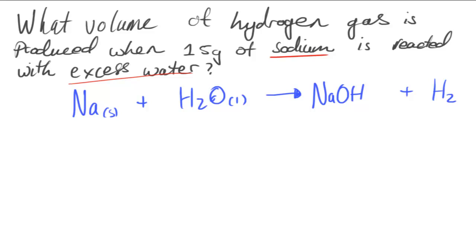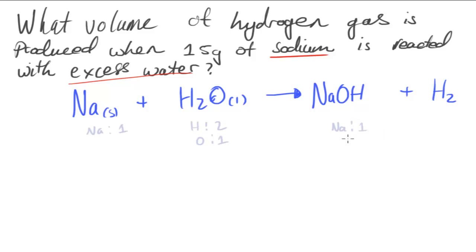To balance the equation, on the left side I have one sodium atom, two hydrogens, and one oxygen. On the right side I have one sodium, one oxygen, and three hydrogens.